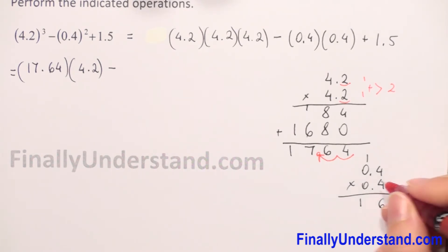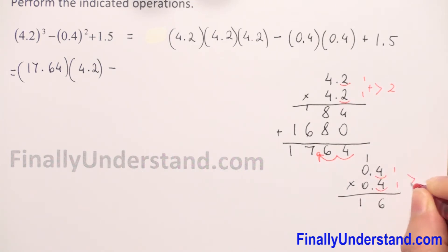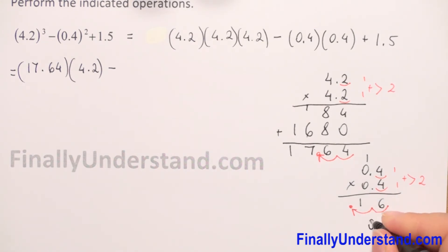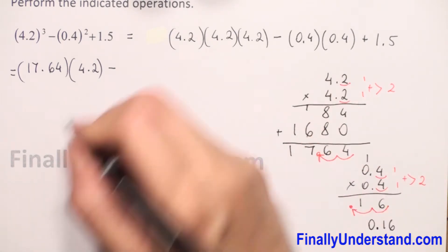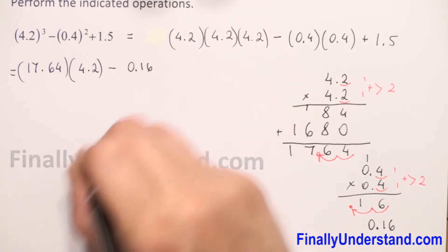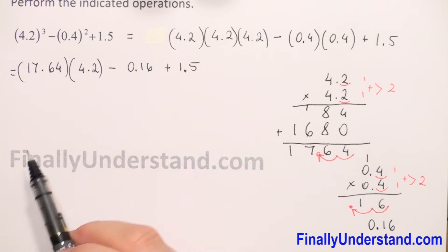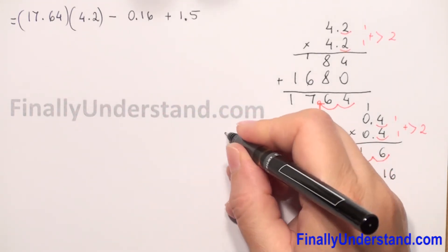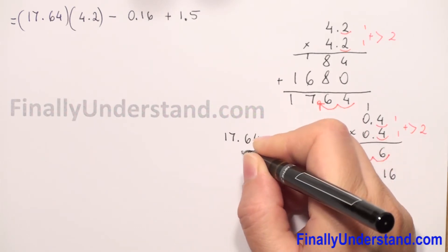Now we count decimal places for 0.4 × 0.4: the first number has 1 decimal place, the second has 1, so we have 2 decimal places total. Counting from right to left, the decimal point goes before the 1, giving us 0.16. Coming back to our full expression, we have 17.64 × 4.2 − 0.16 + 1.5.